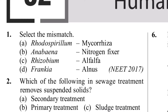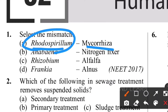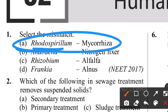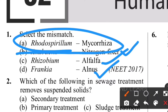First question: select the mismatch pair. Option A - Rhodospirilum and Mycorrhiza - there is no relation between these two. Rhodospirilum is a nitrogen-fixing bacteria, but Mycorrhiza is a symbiotic association between fungi and roots. There is no relationship between them, so option A is the correct answer. Anabaena is the nitrogen fixer, Rhizobium is correct, and Frankia with Alnus is correct.